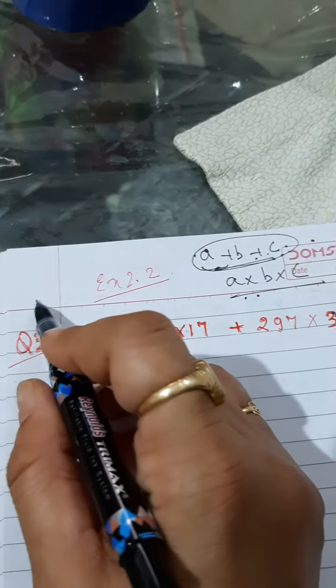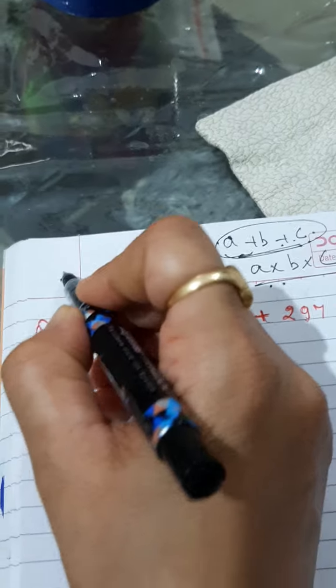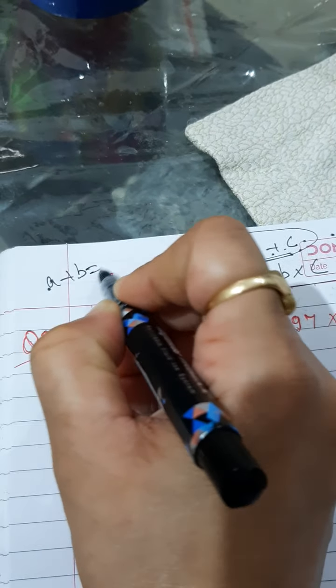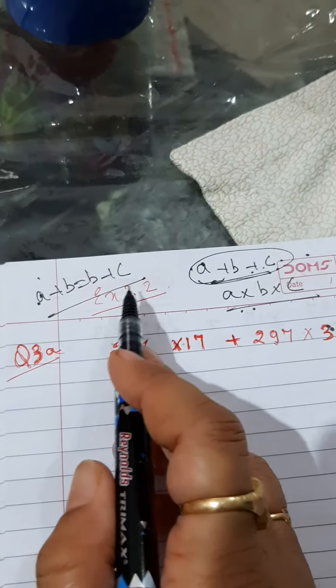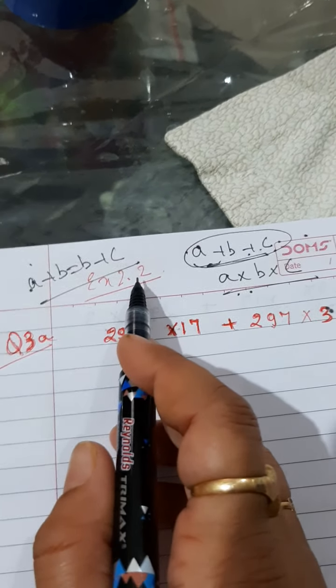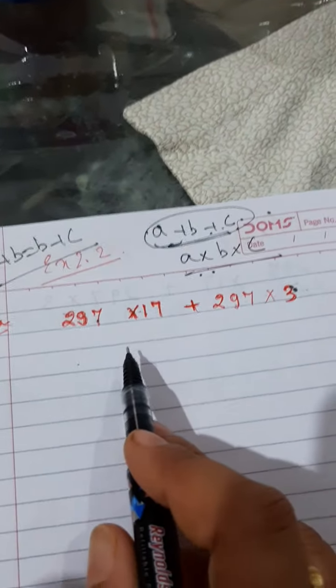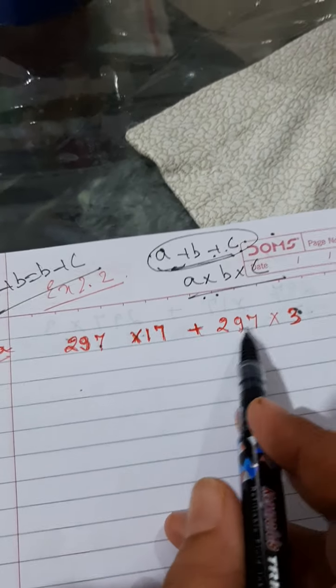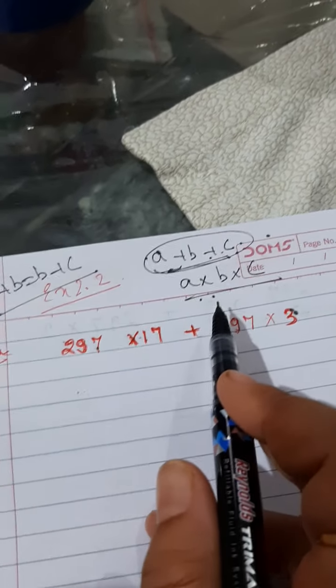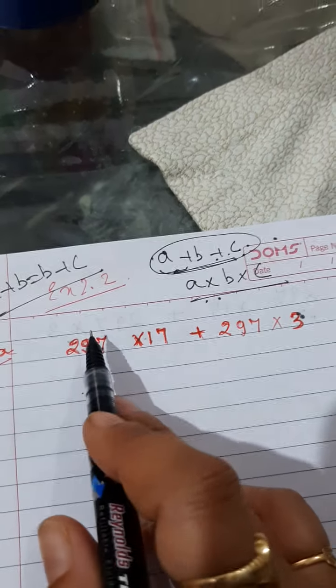Same thing is there with commutative property. a plus b equals b plus a, or a into b equals b into a. So here you can understand that this property doesn't support associative or commutative property.